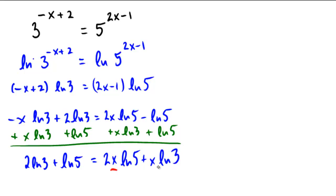So no stress, there's the x that's common on this right-hand side. So as I move over into the next half over here, I'm going to have 2 ln 3 plus ln 5 equals the x factored out to 2 ln 5 plus ln 3.